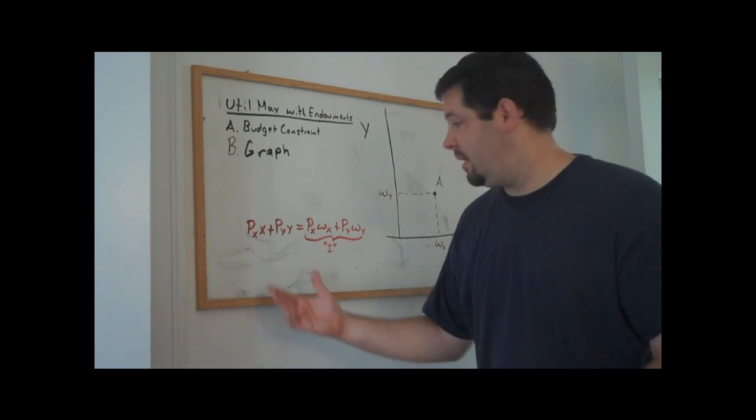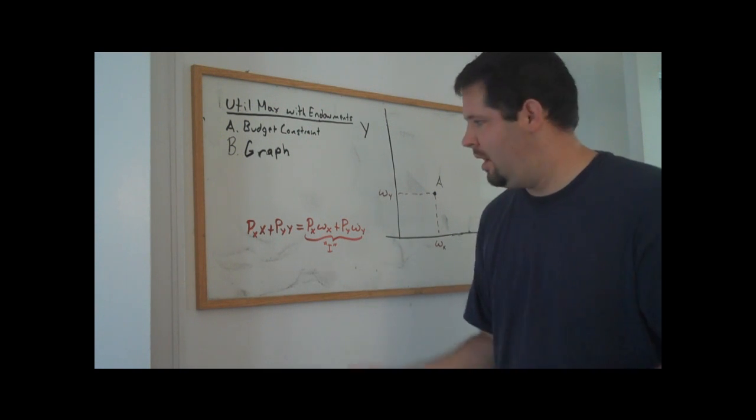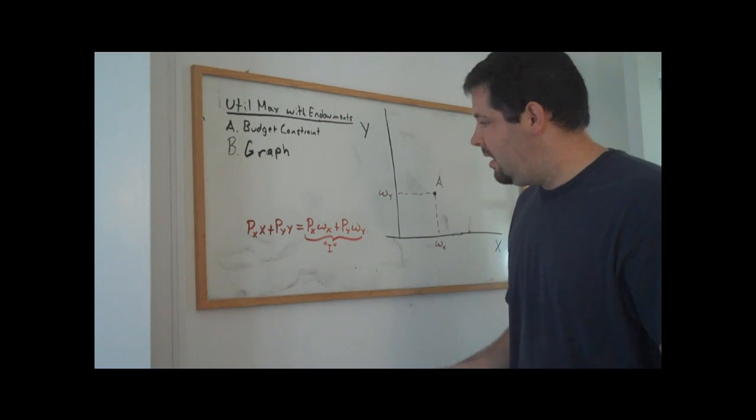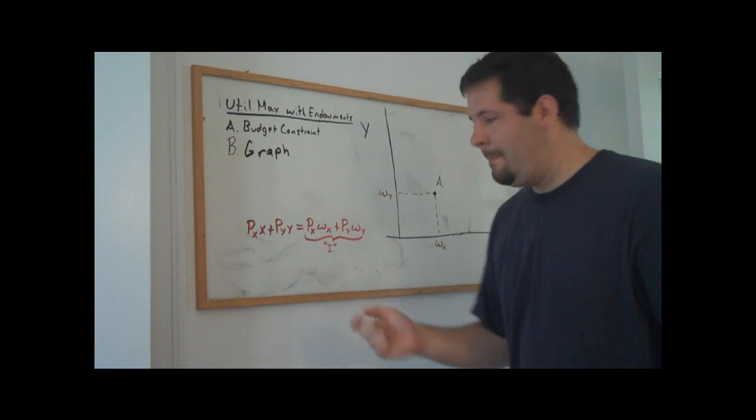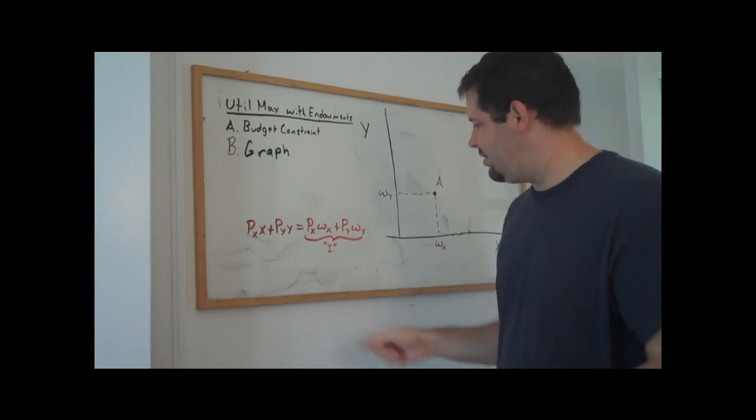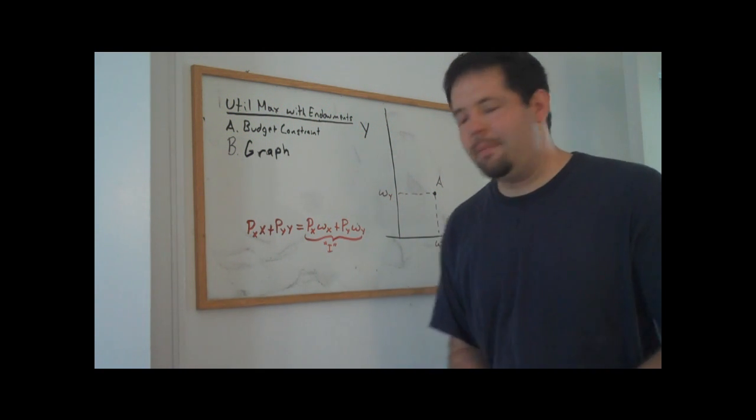And so we could ask those same two questions that we asked before. How much of X could this person consume if they spend all of their resources on X? And we could ask the same question with Y. And then all we'd have to do is just first, in a first stage, compute their effective nominal income.